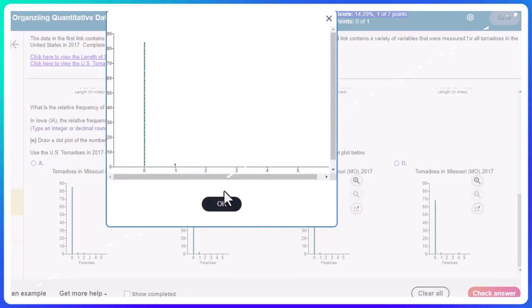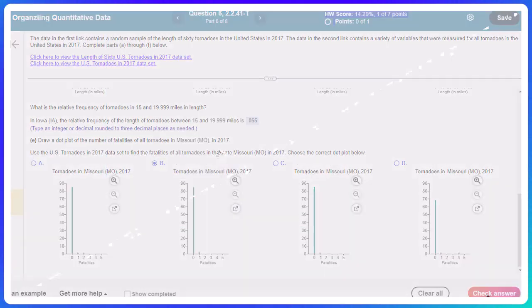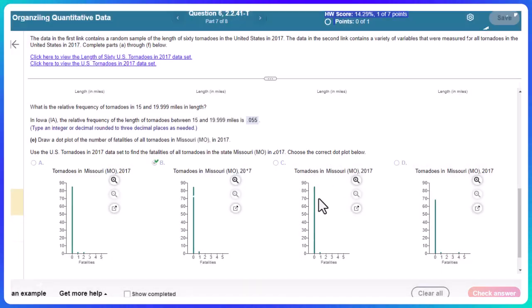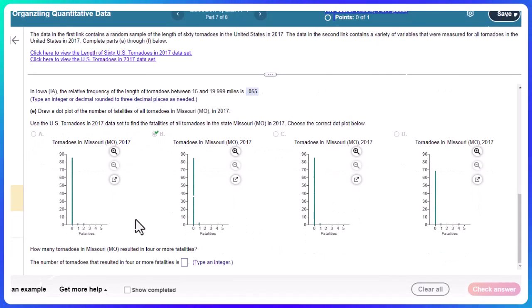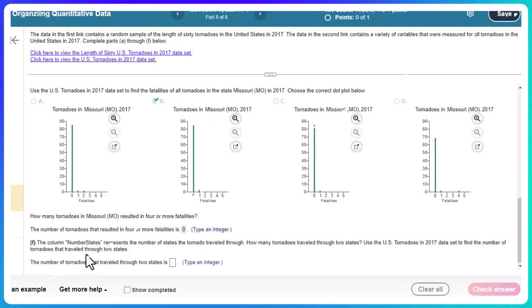And let's blow this up just to make sure. Oh, I need to blow it up even more. That's a little hard to see. But there are two dots there. I think you get two choices. So if you didn't get around on that one, it had to be this one. How many tornadoes in Missouri result in four or more fatalities? Well, we didn't have any, did we? So that'd be zero.